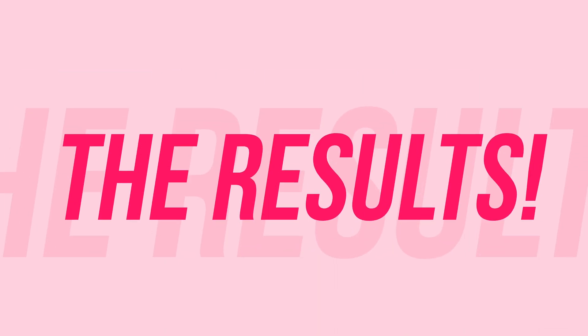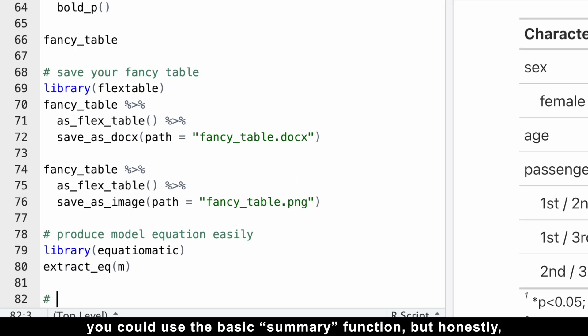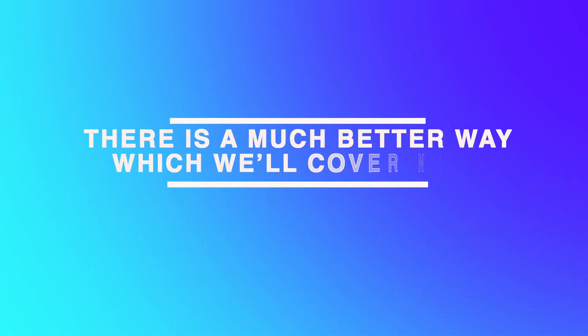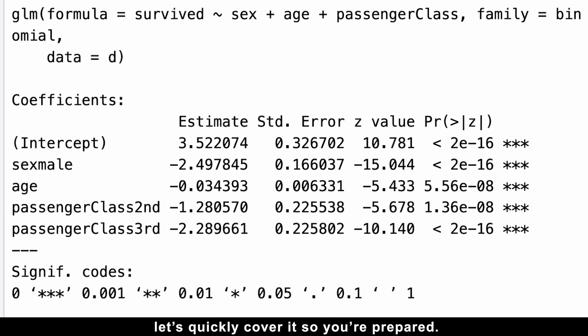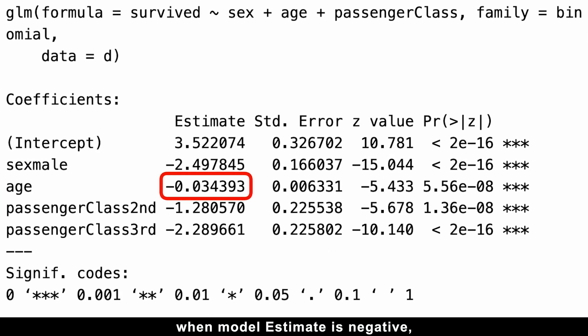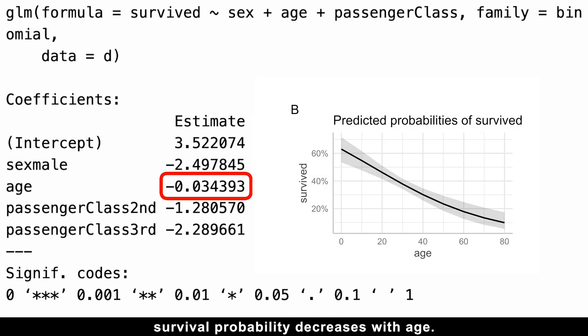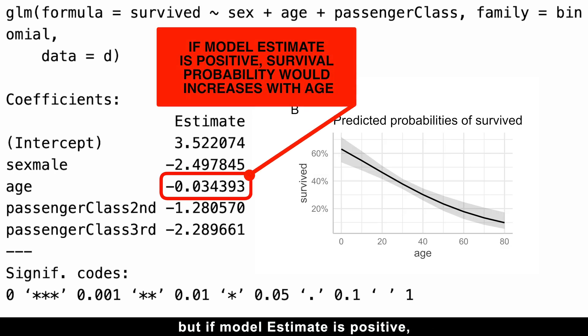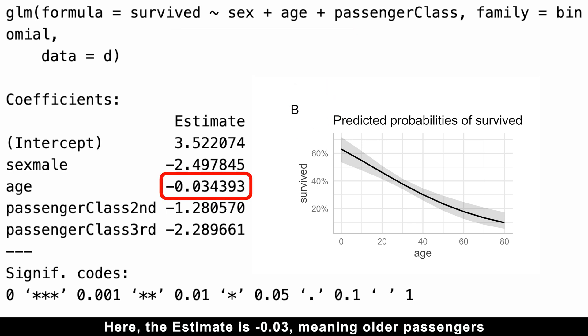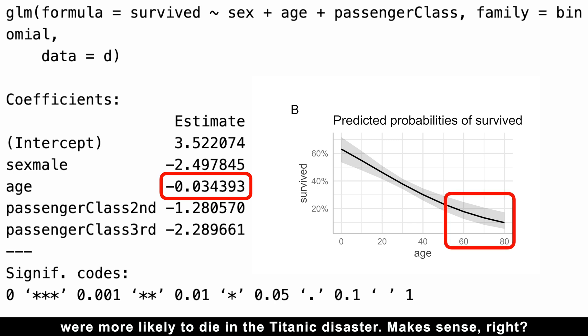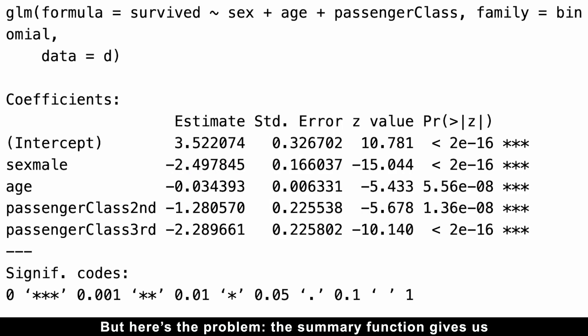Alright, let's interpret the results. Now, you could use the basic summary function, but honestly, there's a much better way which we'll cover next. However, since the summary function is so commonly used, let's quickly cover it so you're prepared. When the model estimate is negative, survival probability decreases with age. But if the model estimate is positive, survival probability would increase with age. Here, the estimate is -0.03, meaning older passengers were more likely to die in the Titanic disaster. Makes sense, right? But here's the problem. The summary function gives us less intuitive log odds ratios.